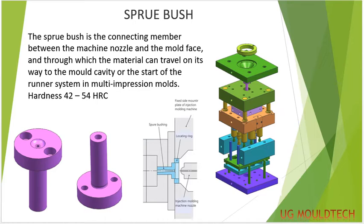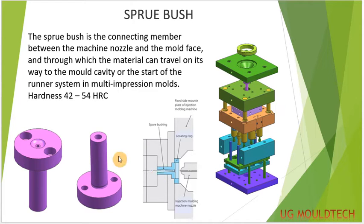The next part is the sprue bush. It will align with the machine nozzle, from where the plastic material will flow from the bush to the cavity to get the desired product shape. The sprue bush is the connecting member between the machine nozzle and the mold face, through which the material travels on its way to the mold cavity or the start of the runner system in a multi-cavity system. The HRC of the sprue bush will be 42 to 54.